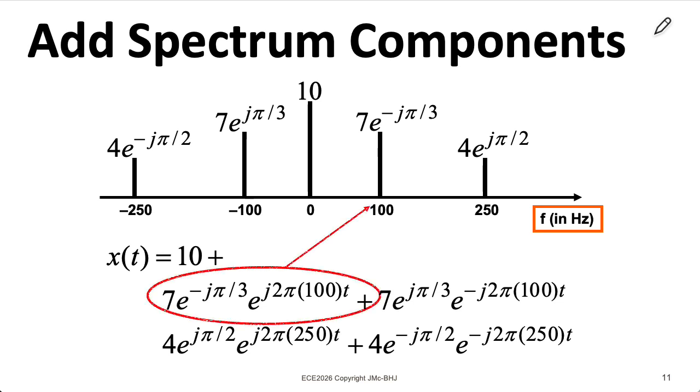Now for the rest of the terms, you'll have an E to the j omega t factor. Here, our horizontal axis is in hertz. So I need to multiply by 2 pi in order to convert from hertz to radians per second. And then I take the coefficient that I see written here and just write it in front. And I do that for all the terms.